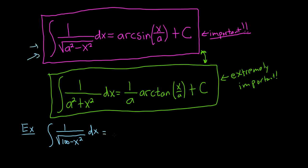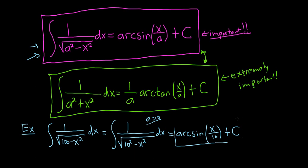And what you can do if you really want to make it match is you can rewrite it as follows. It's 1 over the square root, you can write 100 as a number squared, so 10 squared minus x squared dx. And now you see that your a is equal to 10, and so you can just directly apply the formula. So this would be equal to the arcsine of x over a, so x over 10, plus our constant of integration, capital C. And that would be the answer.